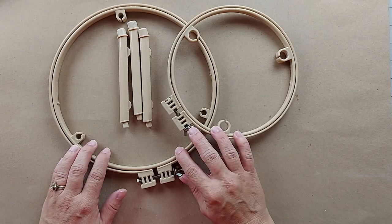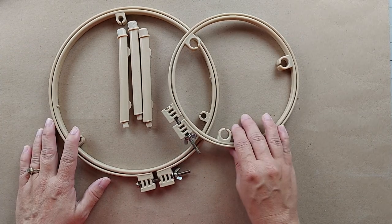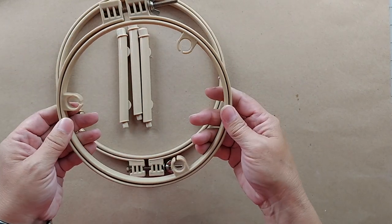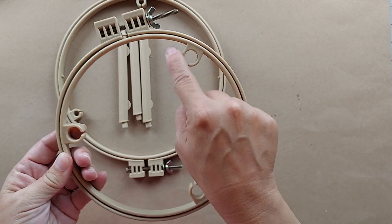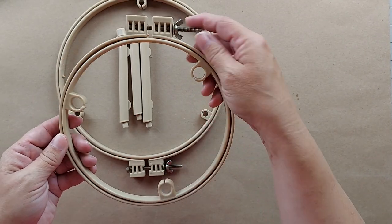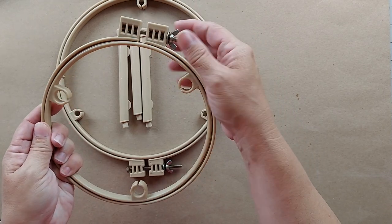When you take the hoop out of the package, these are the parts that you will have. You can use either of the hoops by itself if you want. Since the attachments for the pillars are on the inside of the hoop, it doesn't affect getting the weaver's cloth tight. You can still get the weaver's cloth tight.